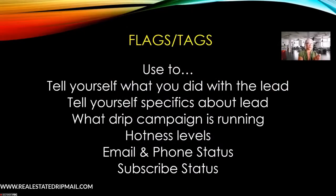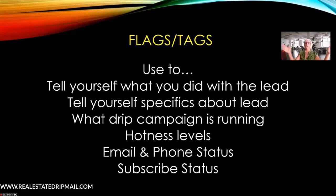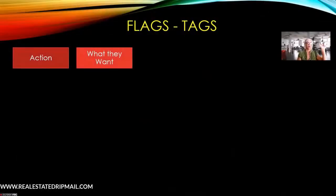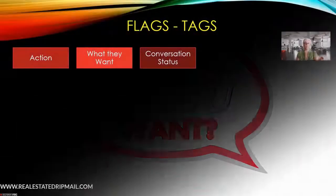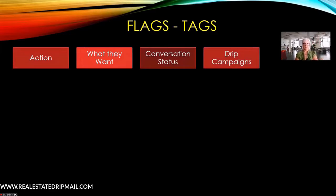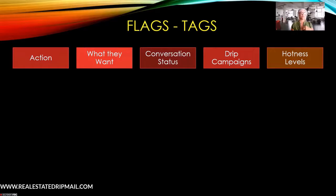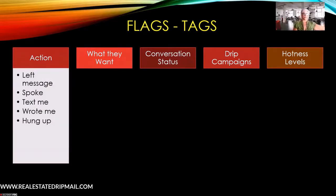I get asked this all the time — how do you use your flags and tags? Almost all CRM systems have some sort of flagging ability. Now, we already have a contact type, a status, and a source, so we're not going to use a flag for those three things. I use flags for different things: action, what they want, conversation status, drip campaigns, and hotness levels.